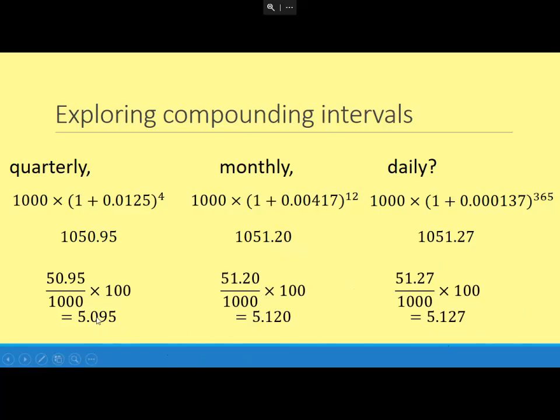And the daily one, so £51.27 divided by £1,000 times 100 is 5.127%. Those values down there are the AERs. So a 5% nominal interest rate, if it's being paid quarterly, the equivalent annual rate is 5.095%. You do get a tiny bit extra if it's being paid monthly—5.12% annual equivalent rate. And a daily compounded nominal interest rate of 5% actually works out as 5.127% AER. These little fractions of a percent are enough to make a difference, especially on long-term loans and savings.